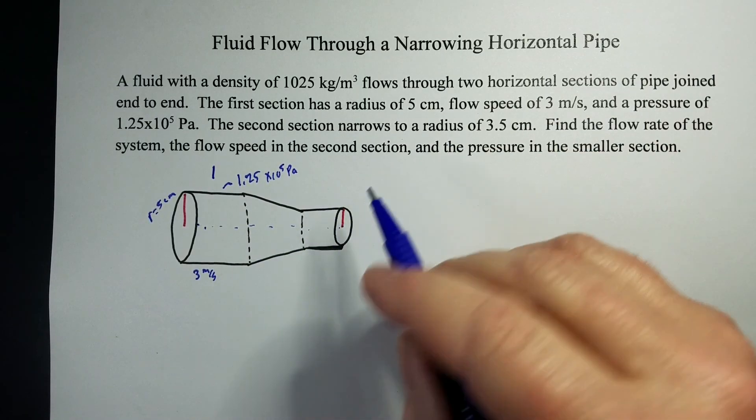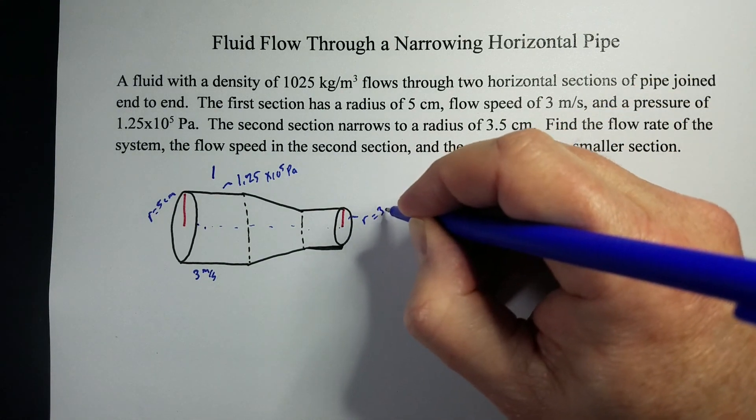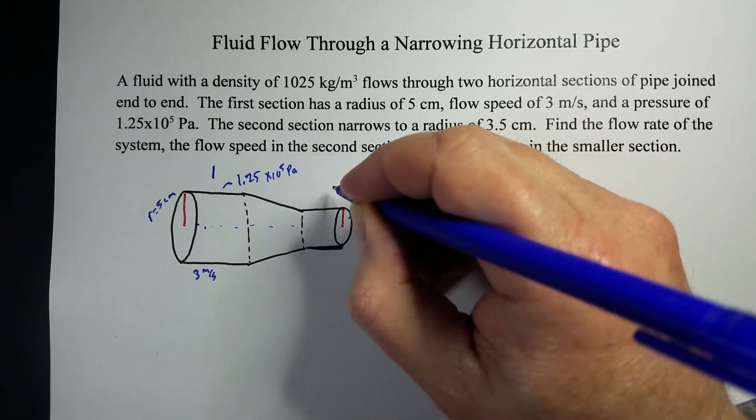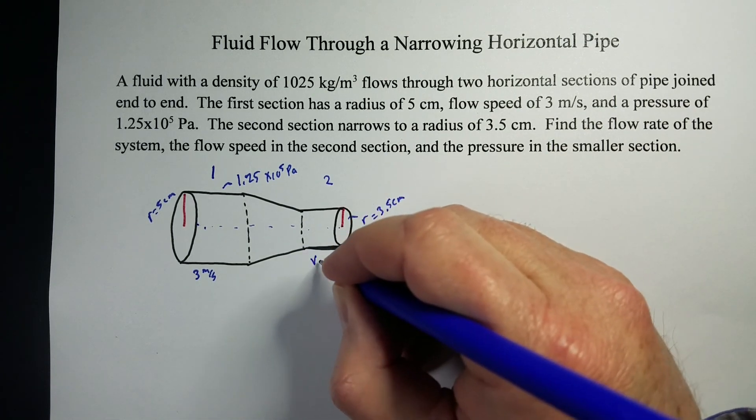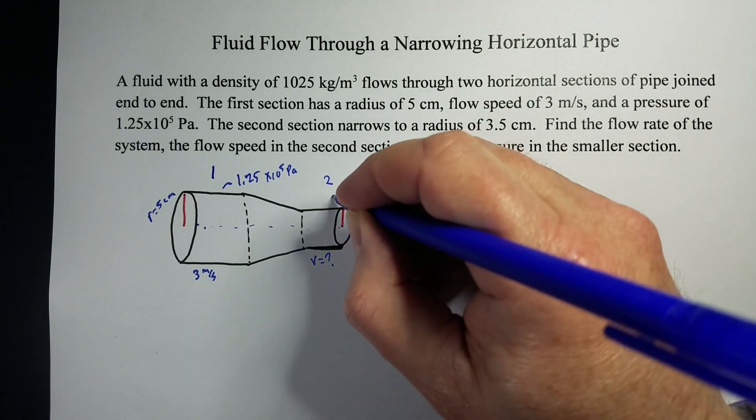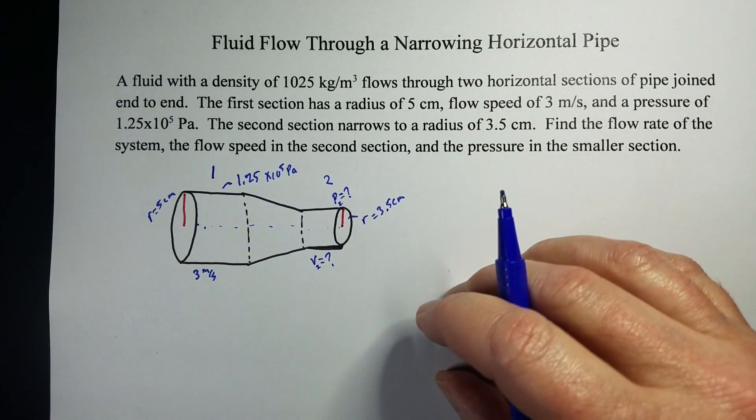And then it tapers down to a radius of 3.5 centimeters in this second section. And we don't know the flow speed, and we don't know the pressure. But that's what we're going to figure out in this problem.